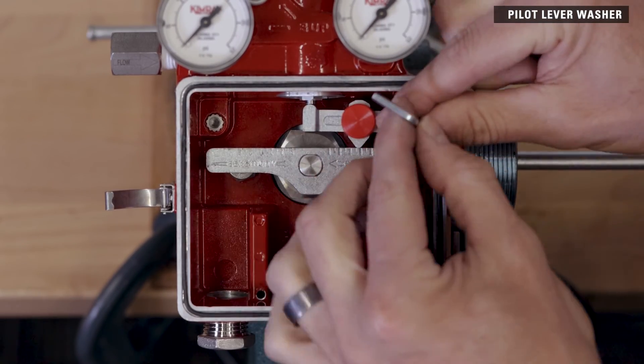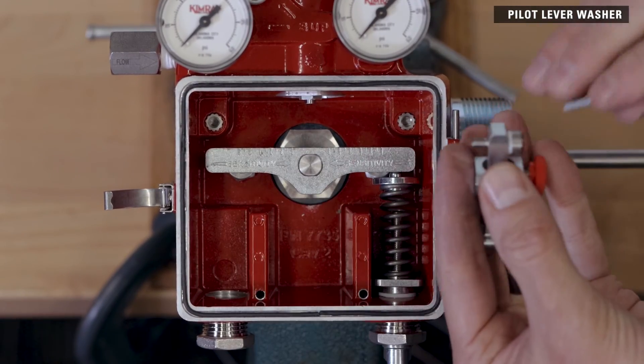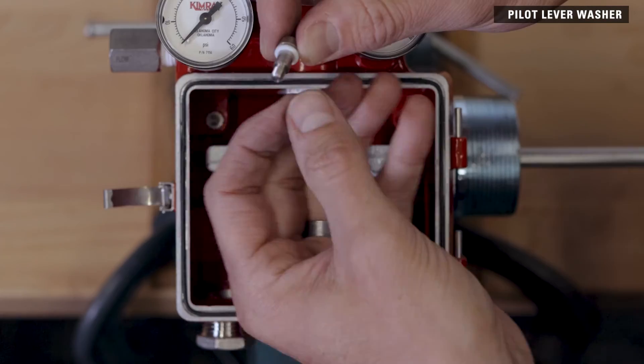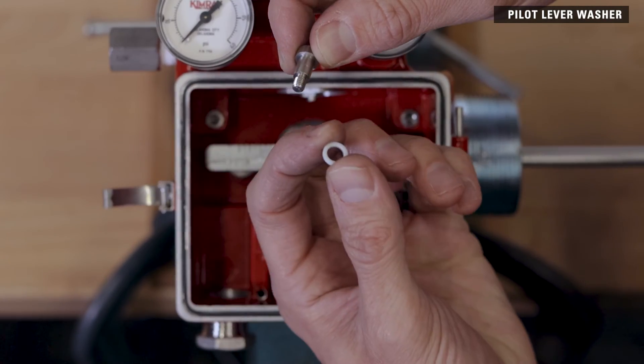Lastly, use the one-eighth inch hex key to remove the pilot lever screw. Replace the pilot lever washer and reinstall the screw.